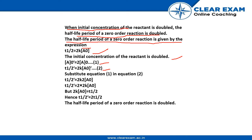Substitute equation 1 in equation 2: T1'/2 = 2k(2A0) = 2 × 2kA0. But 2kA0 is T1/2, so T1'/2 = 2T1/2.